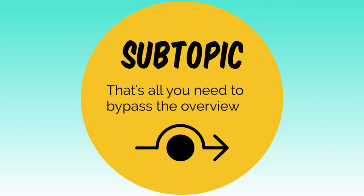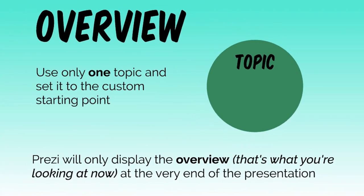That's all you need to bypass the overview. Use only one topic, and set it to the custom starting point. Prezi will only display the overview — and that's what you're looking at right now — at the very end of the presentation.